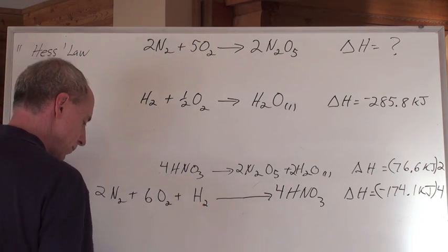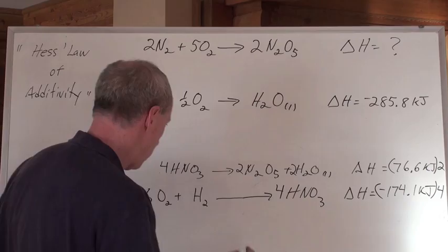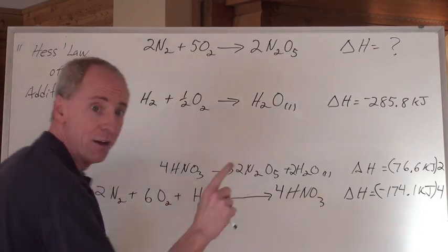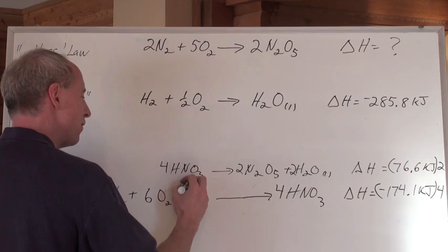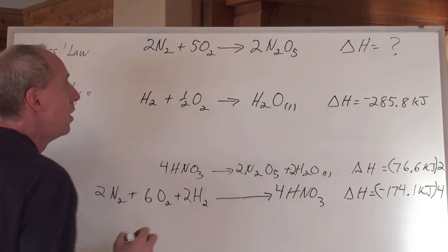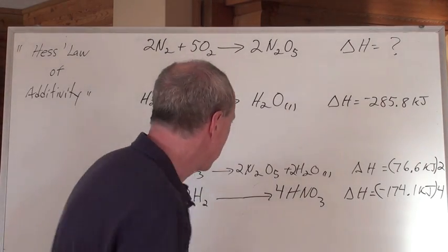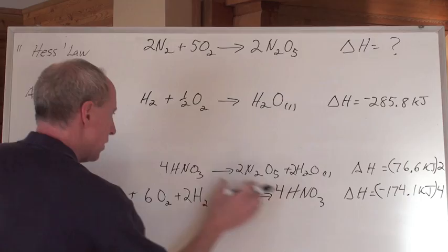What do I do with that H2? Times two, that's going to give us, well, two times a half. Sorry, four. Four times a half, right? So four times a half is going to give us two H2s. So now I've canceled out the HNO3s.